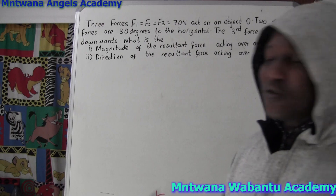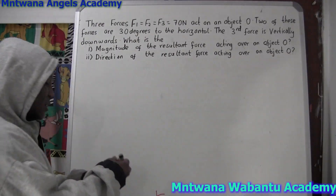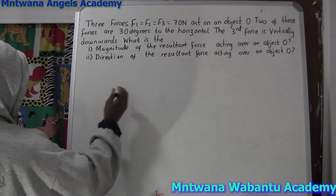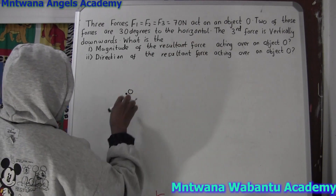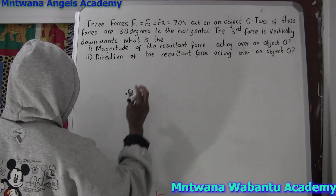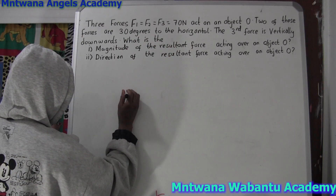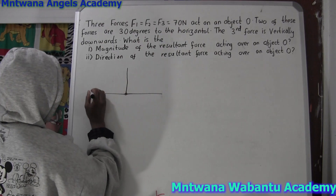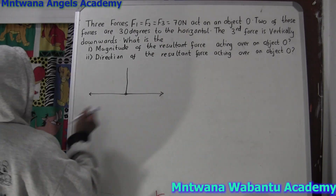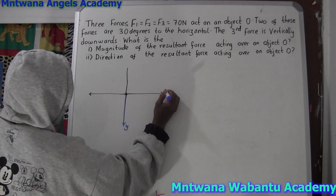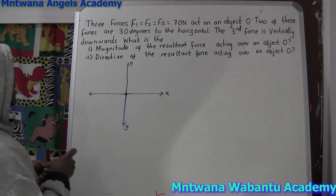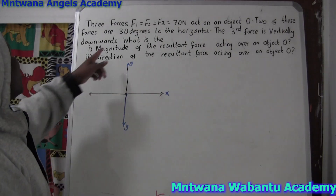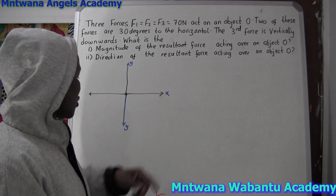So this problem is about three forces. We have three forces: F1, F2, and F3. They say the three forces act on an actual object O and have a resultant of 17 newtons. Two of these forces are at 30 degrees to the horizontal. So we have our x-axis (horizontal) and y-axis (vertical).